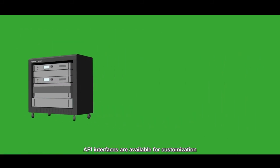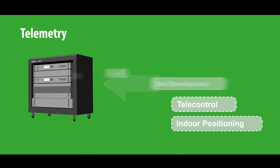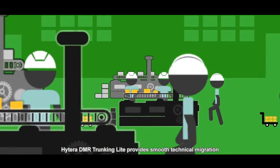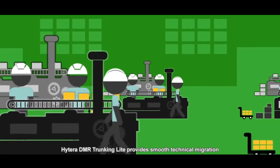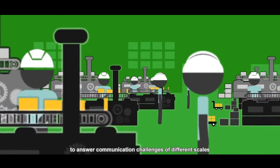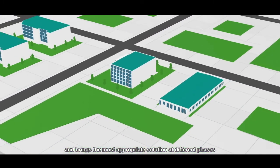API interfaces are available for customization, secondary development, and third-party integration. Hytera DMR trunking light provides smooth technical migration to answer communication challenges of different scales. It grows with the system owner and users, ensures the initial investment, and brings the most appropriate solution at different phases.